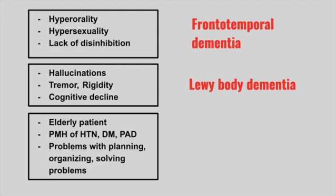Next is an elderly patient with a past medical history of hypertension, diabetes, or peripheral artery disease. They have problems with planning, organizing, and solving problems. This is vascular dementia. It causes problems in day-to-day functioning and presents as a stepwise decline.